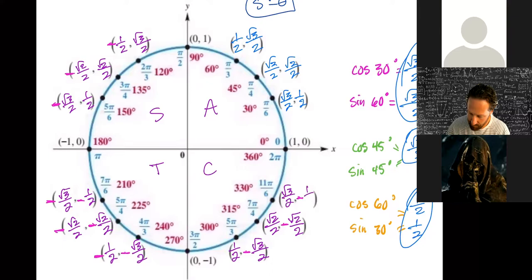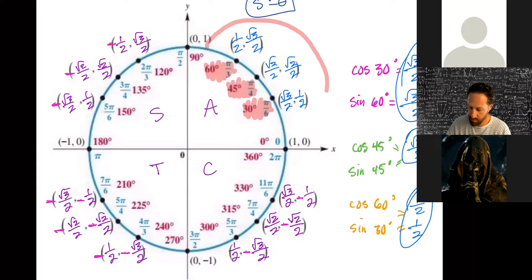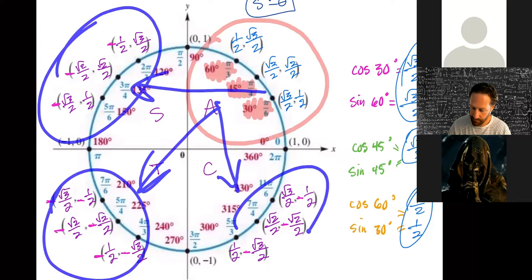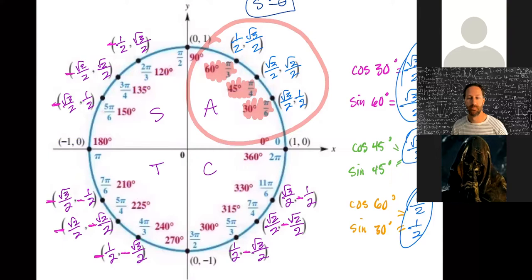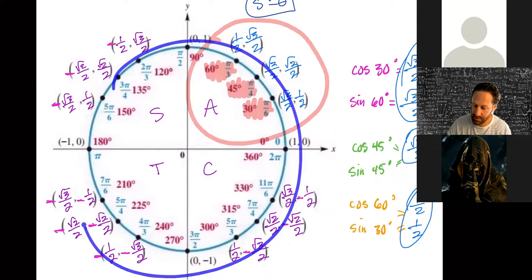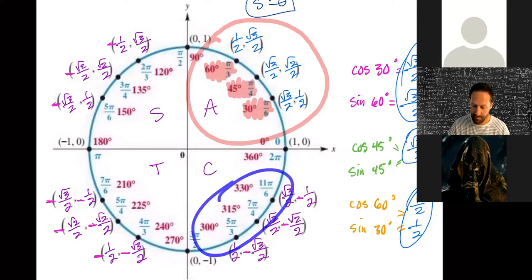There is your unit circle. All you really needed to know were the 30, 45, and 60 reference angles — because those give you the same values everywhere on the circle. The only thing that changes is whether x and y are positive or negative. Some people like having everything listed for every angle, but I find reference angles much easier to memorize.